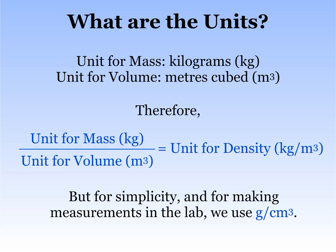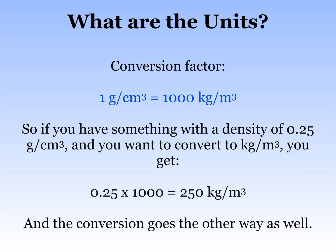In the exam, students often forget to give the units, so let's take a review. The unit for mass is kilograms and the unit for volume is meters cubed. From this we can deduce that the unit for density is kilograms per meter cubed. But for simplicity's sake and for measurements in the lab, we use grams per centimeter cubed. Here's the conversion factor: one gram per centimeter cubed equals 1000 kilograms per meter cubed. So if you've got something with a density of 0.25 grams per centimeter cubed and you want to convert to kilograms per meter cubed, you get an answer of 250 kilograms per meter cubed. The conversion goes the other way as well.